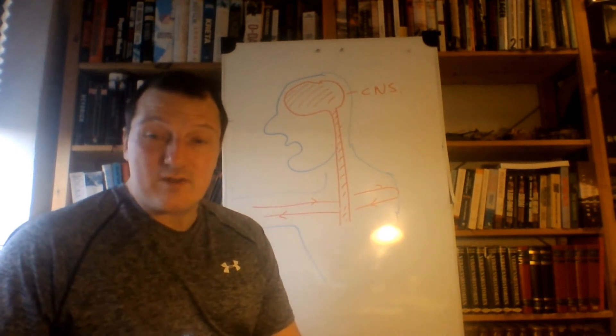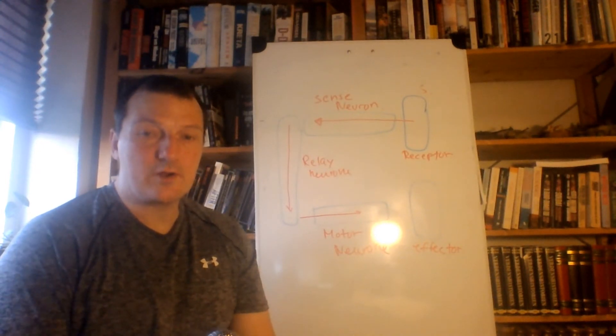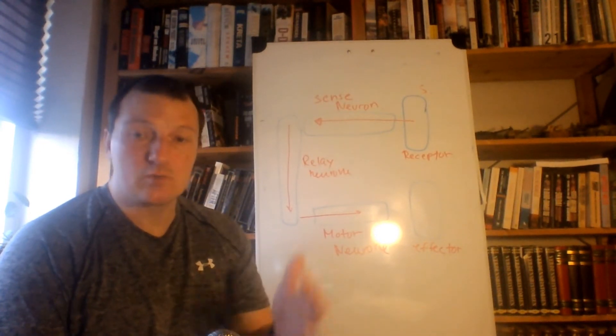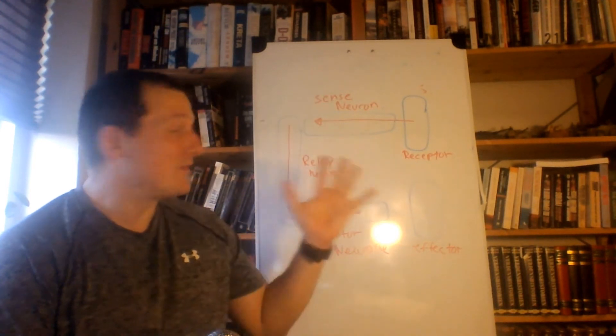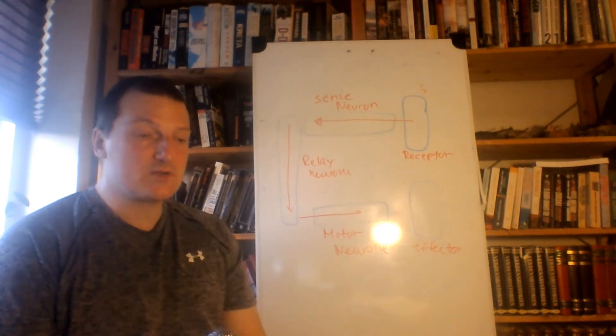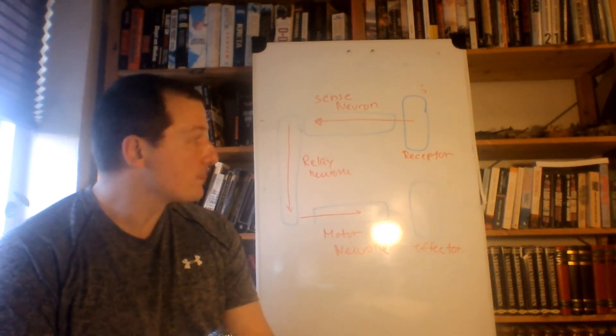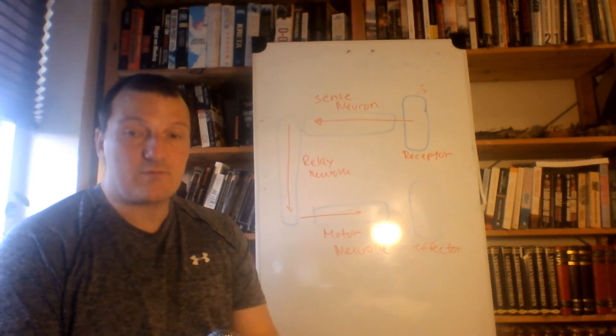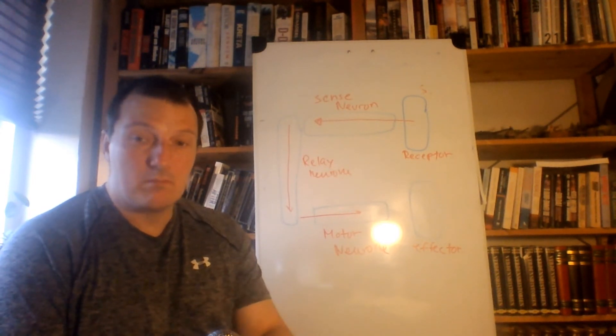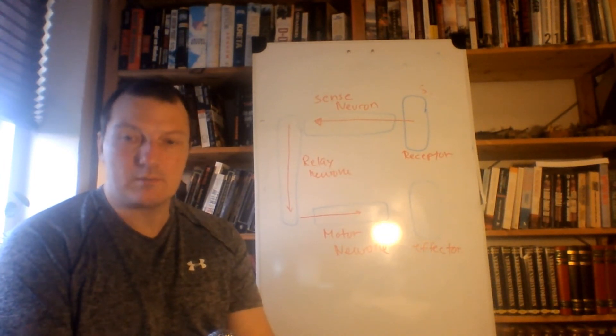So we're here going to have a look at the schematics of what's called a reflex arc. This is of course a much simplified version of what actually happens, but it is the illustration used in the book and in the syllabus, and it's very good to understand. Now let's say for example that you put your hand on a hot plate. By the way, don't do it, but if you do...